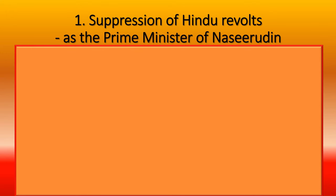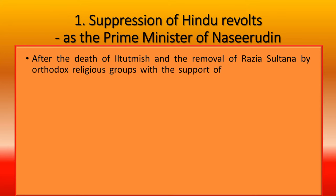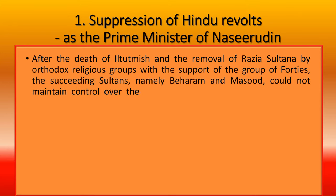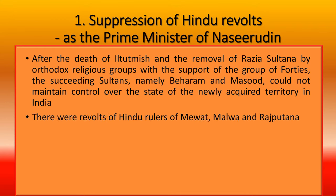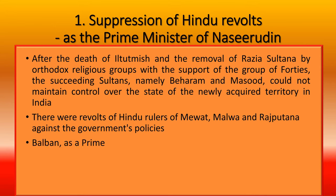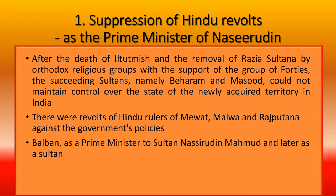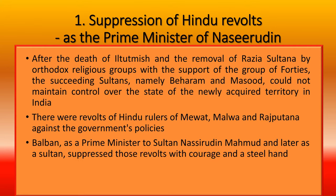After the death of Iltutmish and the removal of Raziya Sultana by orthodox religious groups with the support of the group of forties, the succeeding sultans — Behram and Masood — could not maintain control over the newly acquired territory in India. There were revolts by Hindu rulers of Mevat, Malwa, and Rajputana against government policies. Balban, as Prime Minister and later as Sultan, suppressed those revolts with courage and a steel hand, including the Hindu rajas of the Ganga-Yamuna region.